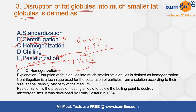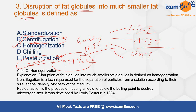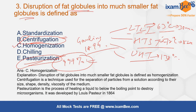Pasteurization can be of several types. One is LTLT, that is low temperature, long time. HTST, high temperature, short time. And UHT, which is also known as ultra-pasteurization. The specific temperature requirements are: for LTLT, 63°C for 30 minutes; for HTST, 72°C for 15 seconds; and for UHT, 138°C for 2 seconds.